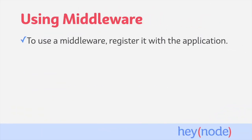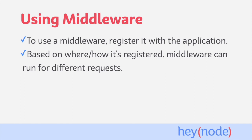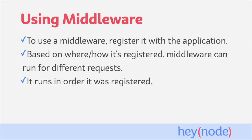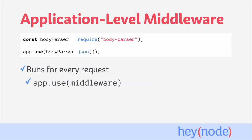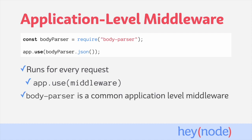Once you have a middleware you want to use, it needs to be registered with the application, which can be done in a few different places. Middleware can be registered with different levels of specificity to determine when and where it is run. Middlewares run one after another in the order they were registered. For middleware you want to run on every request the server receives, you can register it as an application-level middleware using app.use. BodyParser is a common example — it populates the body parameter on the request object with the data from the incoming request body, allowing route handlers and other middleware easy access to the data sent with a request. Passing the BodyParser middleware to app.use without any other arguments will register it to run for every request the server receives.